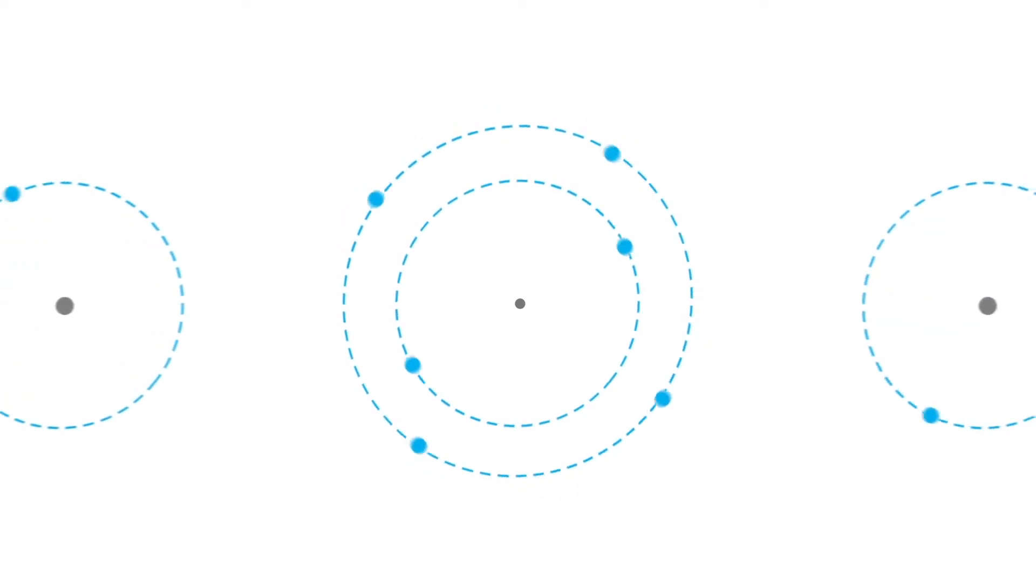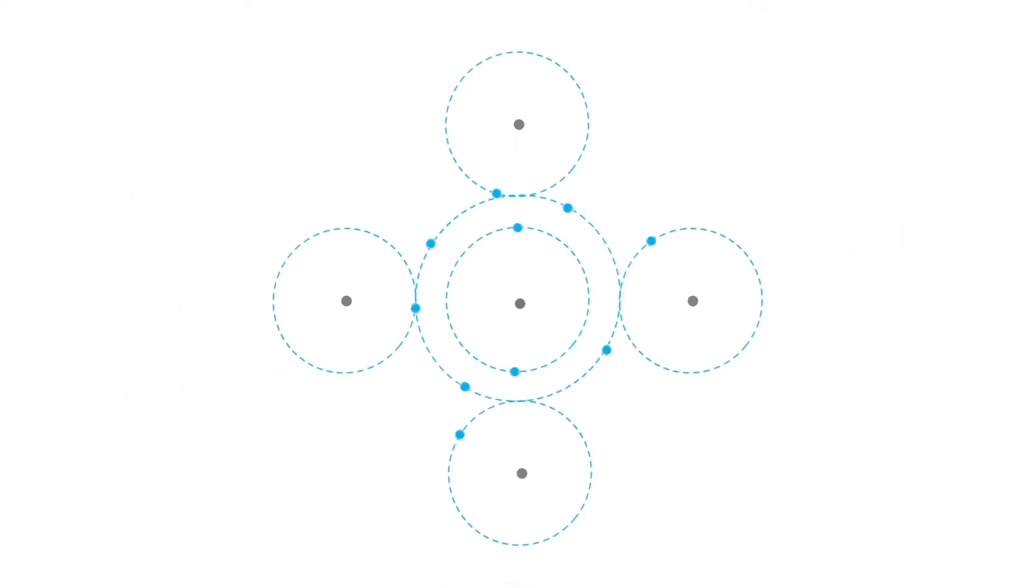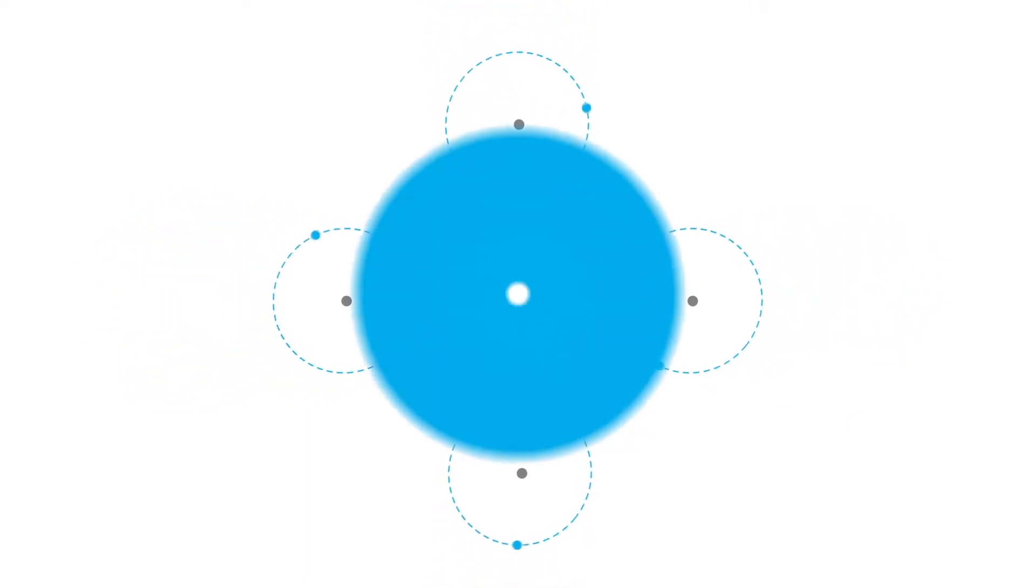These properties define the way atoms combine, or not. Atoms react with each other through electrons of the last layer, the outermost layer. If the last layer has the same number of electrons, this means that the properties of these atoms are identical.